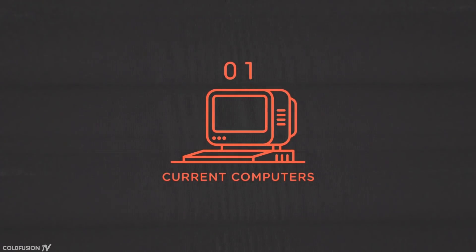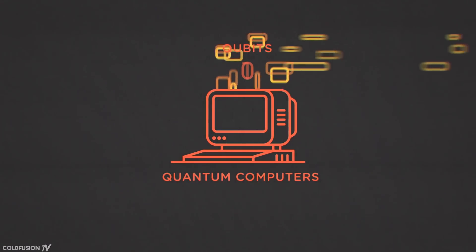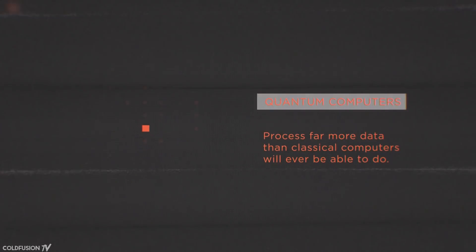Currently, computers use bits which are either a 0 or a 1 to process information. But if we use quantum particles as data, something interesting happens. By using quantum particles called qubits and the property of superposition, they can read both as a 0 or a 1 at the same time. This makes the amount of data that can be represented exponentially greater. This allows quantum computers to process far more data than classical computers will ever be able to do.